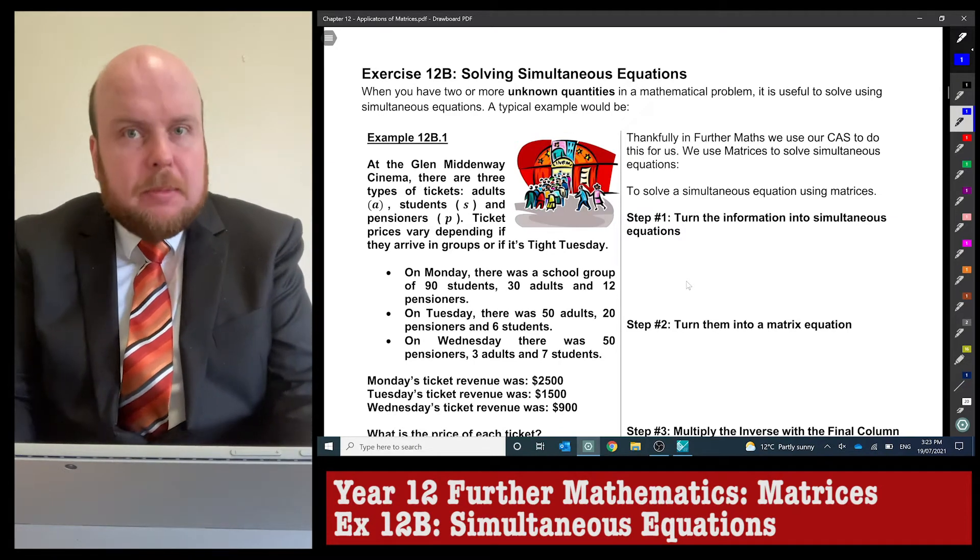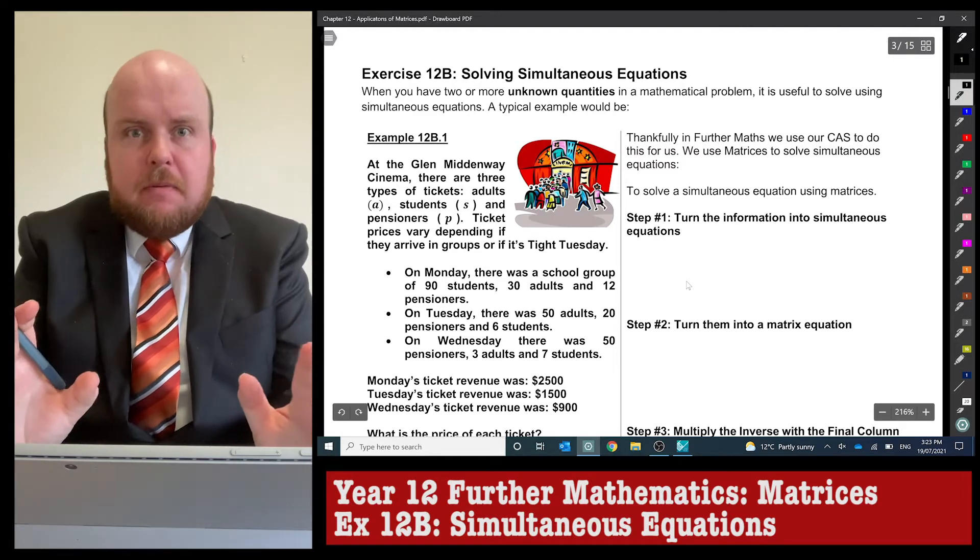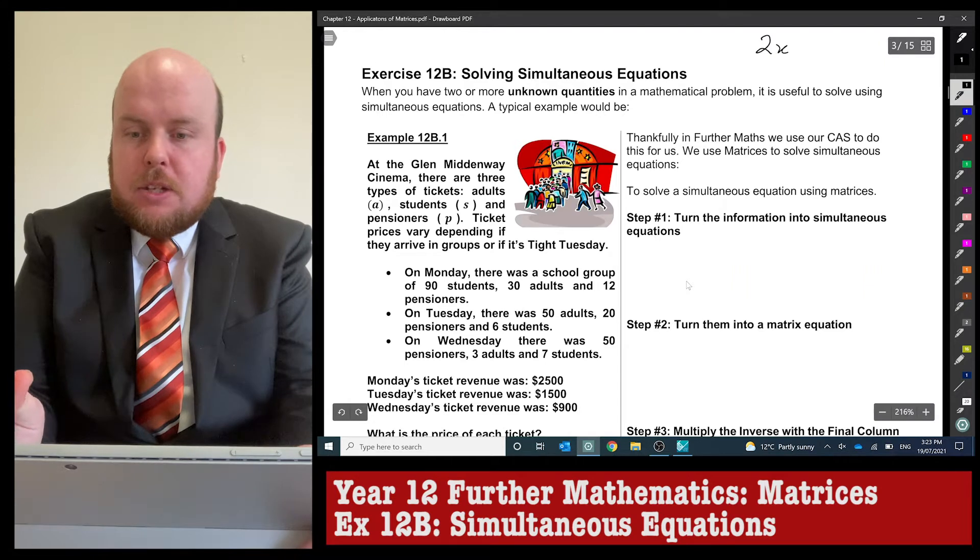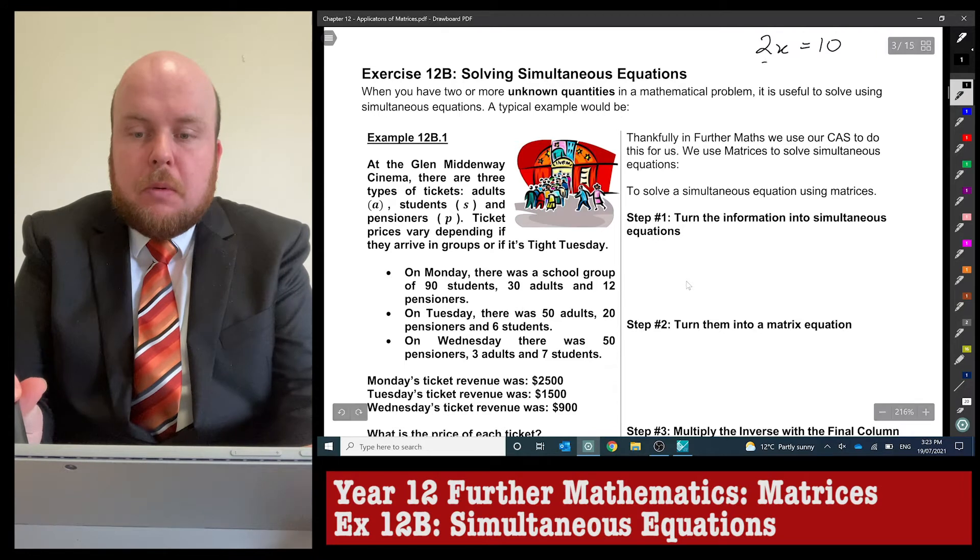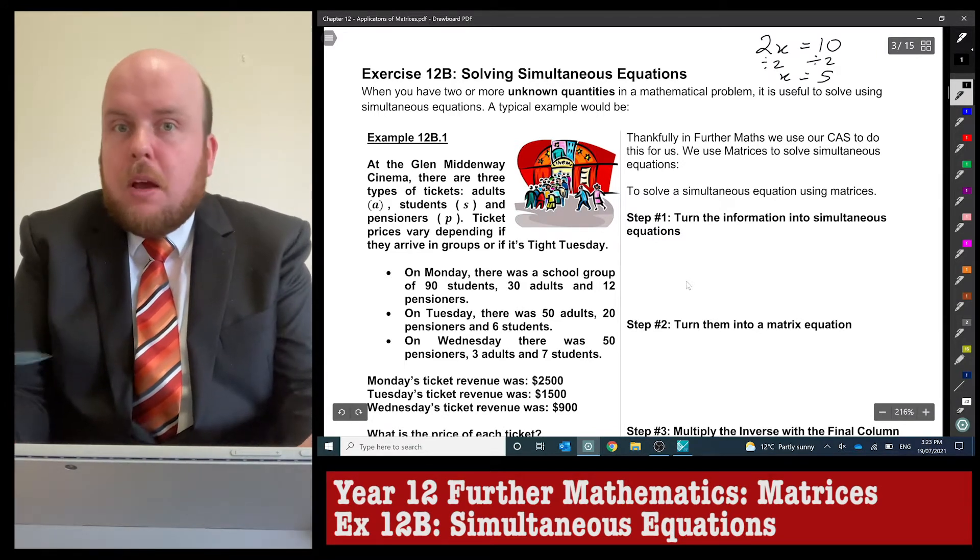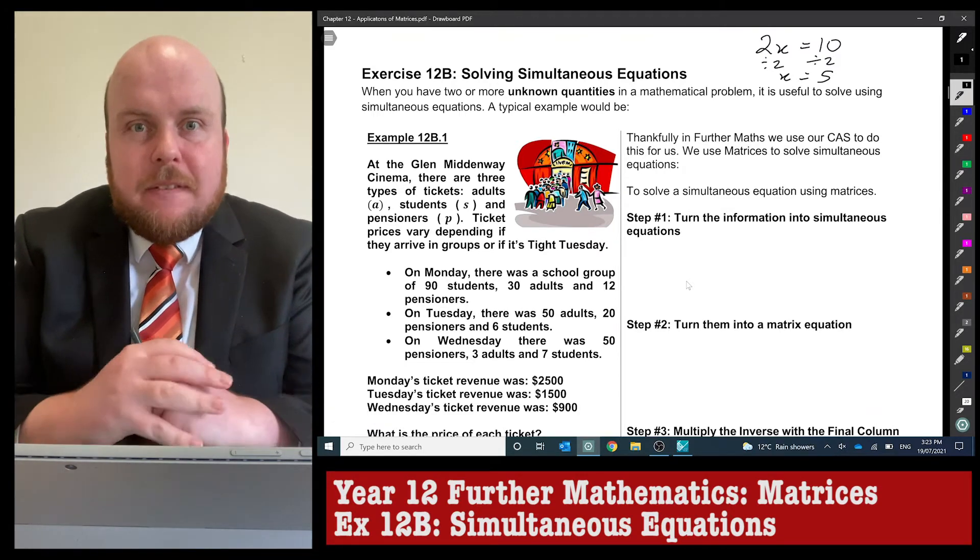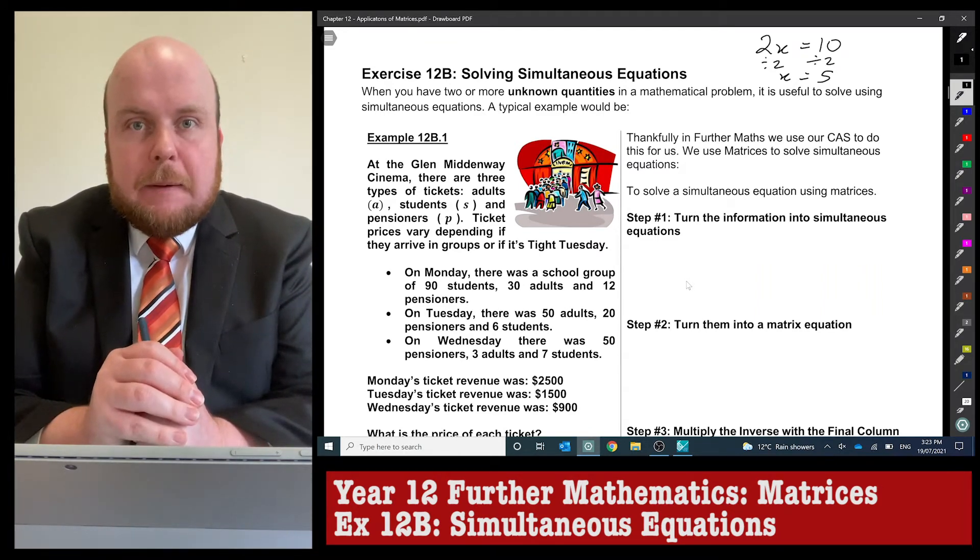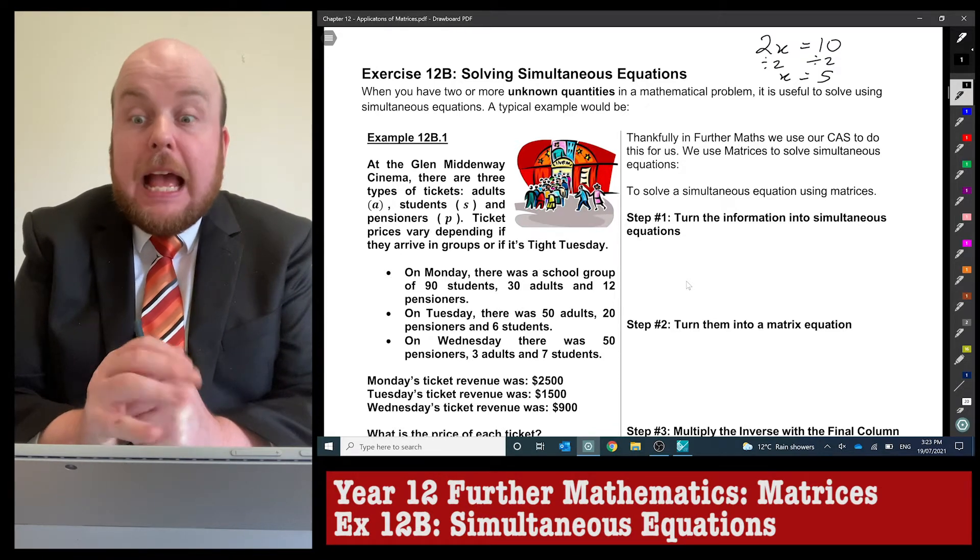Exercise 12B: solving simultaneous equations. From elementary high school algebra, if I had 2x equals 10, what does x equal? We'd normally divide by 2 and find that x equals 5. When finding an unknown for matrices, remember we cannot divide matrices. This is when we apply the understanding of using an inverse matrix in substitution for division.